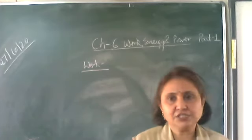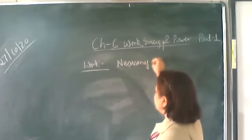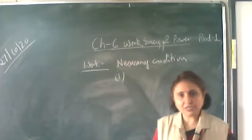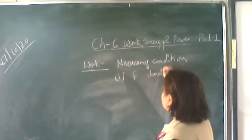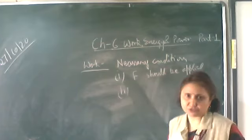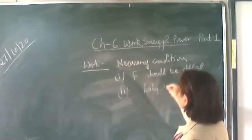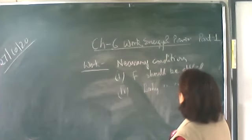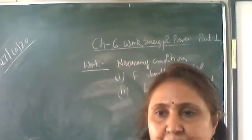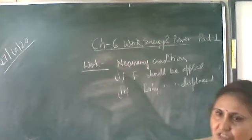There are two necessary conditions for work to be done. The first condition is that a force should be applied — some external unbalanced force. The second condition is that the body should be displaced due to that force. Only under these two conditions do we say that work is done. If force is applied but there is no displacement, then work done is zero.